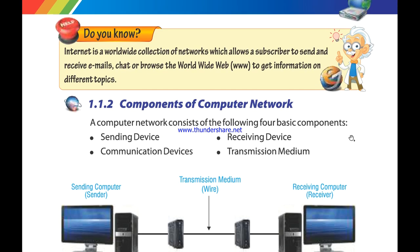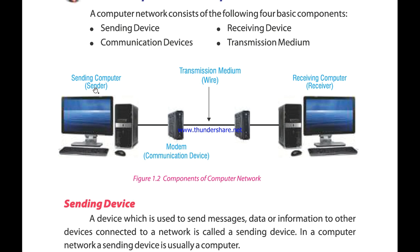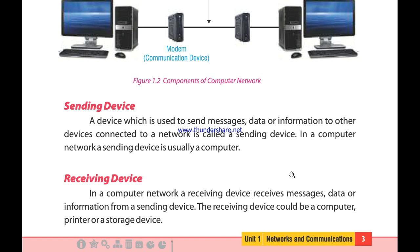A computer network consists of four basic components: sending device, receiving device, communication device, and transmission media. The sending device is the device which is used to send messages, data, or information to other devices connected to a network. In this example, the sending device is usually a computer.